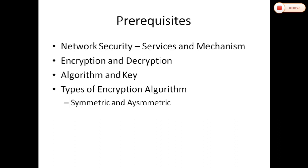In encryption and decryption, ciphertext is converted to plaintext during decryption. Algorithm 1 uses a key for encryption, and Algorithm 2 is the step-by-step process for decryption. If you want to change the key, you can do so. There are two types of encryption methodologies: Asymmetric and Symmetric, depending on the key being used.